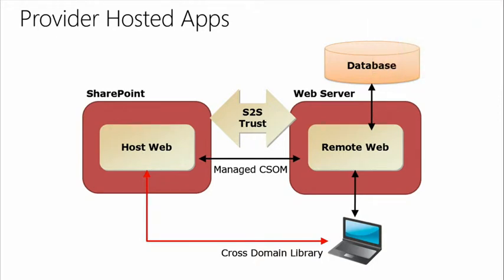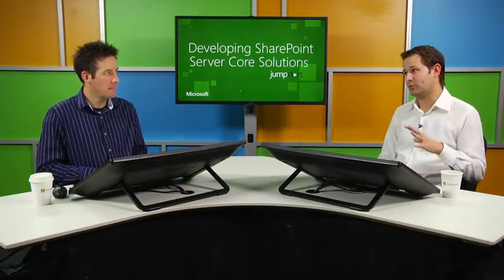Looking at this in more graphical detail: the remote web on one side, the host web on the other, with calls using CSOM in between. On prem you can set up server-to-server trust — S2S — which is a certificate-based authorization system. When a call comes into SharePoint from the app, it's signed using a certificate that validates it came from an authorized source. For Office 365, S2S isn't available, so we use OAuth facilitated through Access Control Services instead.